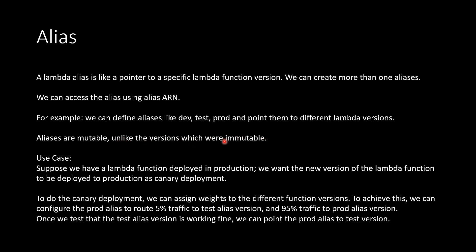We can change the aliases. So what is the use case of an alias? Suppose we have a Lambda function deployed in production and we want a new version to be deployed as a canary deployment. To do the canary deployment, we can assign weights to different function versions using aliases. For example, we can configure the prod alias to route 5% traffic to the test version and 95% traffic to the prod version. Once we confirm the test version is working fine, we can point the prod alias to the test version.